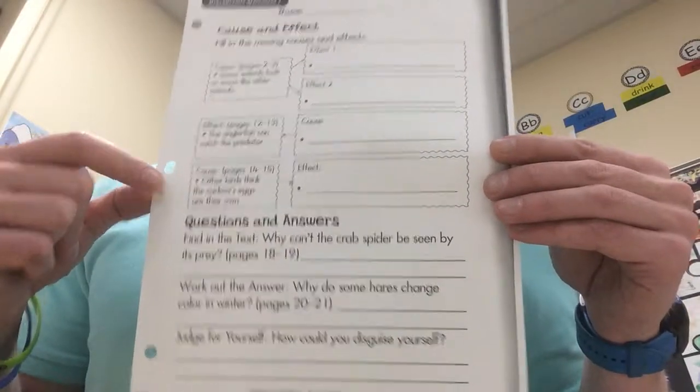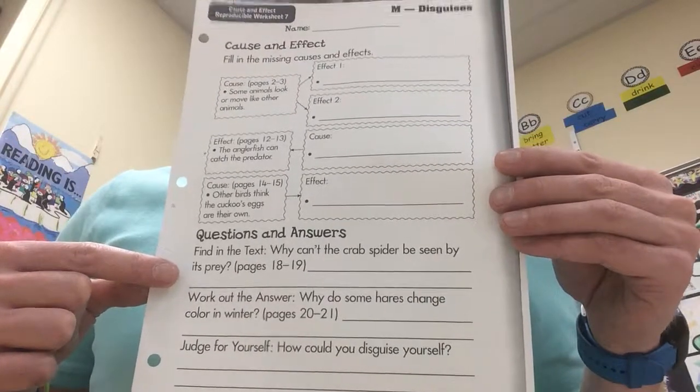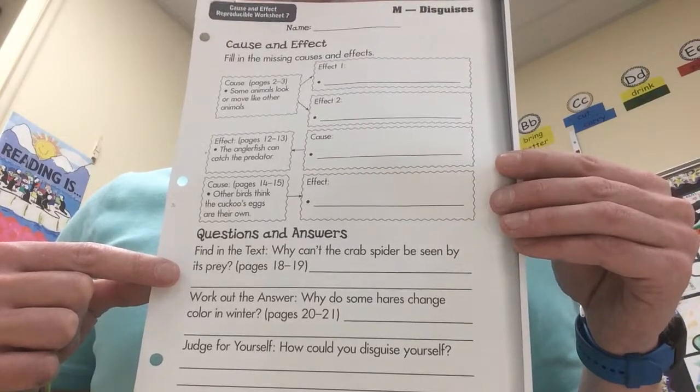For the questions and answers, remember to find it in the text. You can find it right on those pages. Why can't the crab spider be seen by its prey?